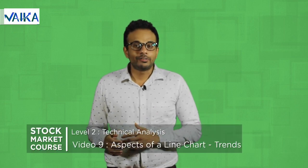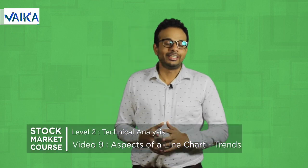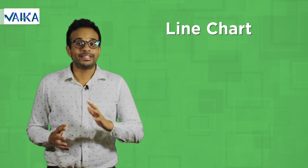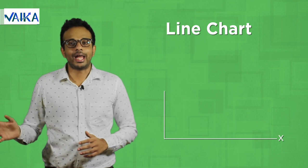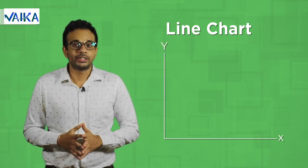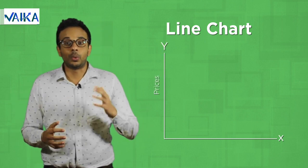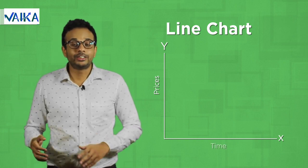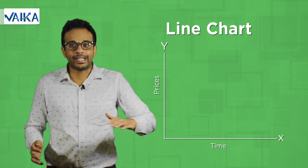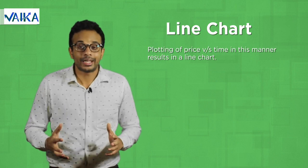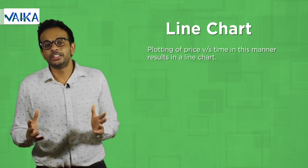The next type of chart we'll talk about is a line chart. You may be wondering what is a line chart. In school, we used to plot data on x-axis and y-axis. Similarly, in the stock market, prices are recorded on the y-axis and time is plotted on the x-axis. The plotting of price versus time in this manner results in a line chart.